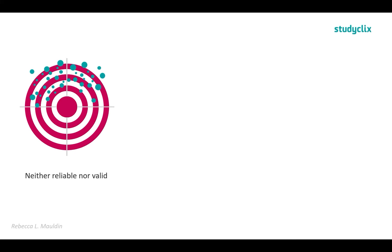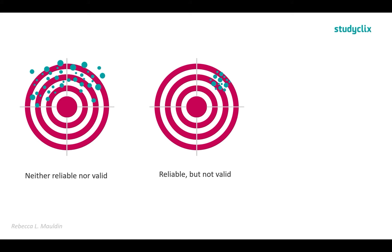Here I have a diagram. The first target shows what results look like if they're neither reliable nor valid — the dots are scattered everywhere with no consistency and they're not centred in one spot. Next, results that are reliable but not valid: they're reliable because they're clustered in one section, getting similar results each time, but they're not valid because they're not hitting the middle of the target — not in the bullseye. It's not measuring what it intends to measure.